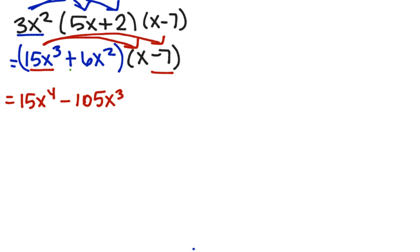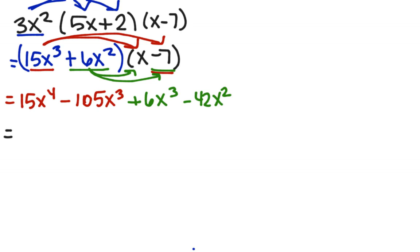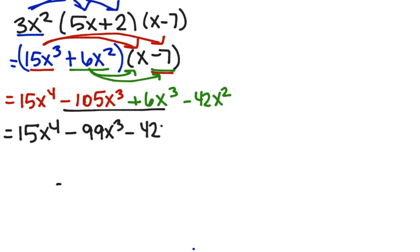Now go back and distribute the 6x squared. 6x squared times x is plus 6x cubed, and 6x squared times negative 7 gives negative 42x squared. Combining like terms, we have the two x cubed terms in the middle: 15x to the 4th, minus 99x cubed, minus 42x squared. Quick check confirms this is in standard form from highest power down.